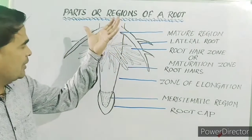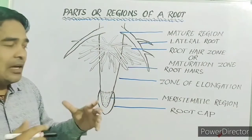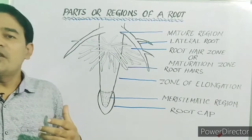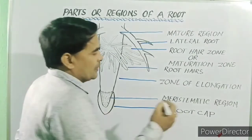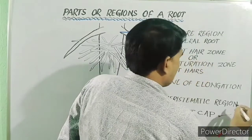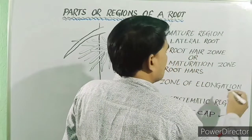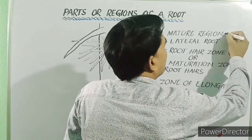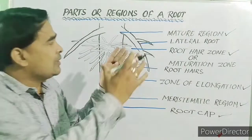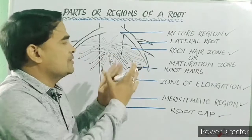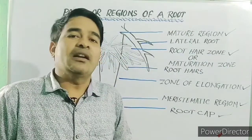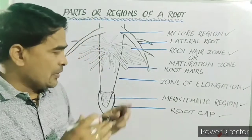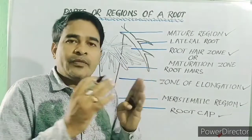As shown in this diagram, there are five regions or parts of an angiospermic root. Those are root cap, meristematic region, zone of elongation, root hair zone, and mature region. All these parts or regions have their specific functions. We will study all these parts one by one.